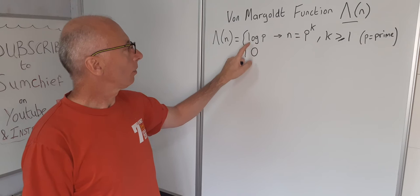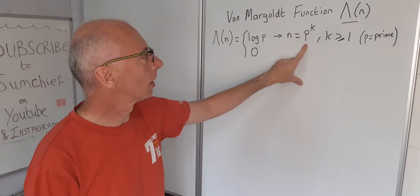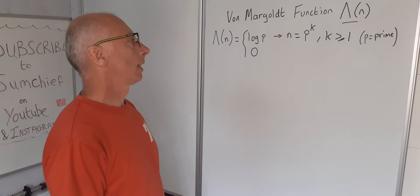So first of all it takes the log of p if n can be made up of p to the power of k, where p is a prime number and k is one or more. Any other occasions it takes the value of zero.